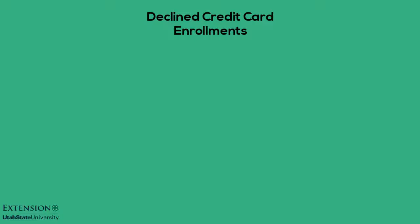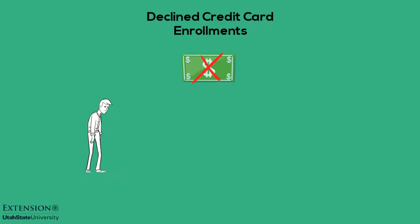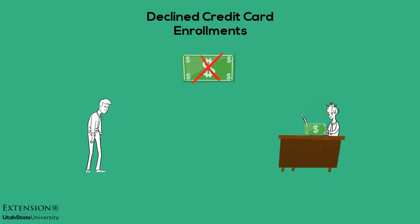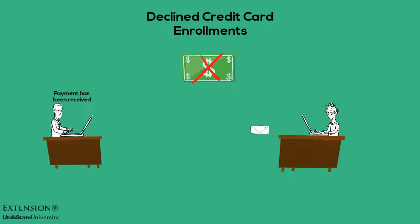If a credit card payment is declined on an enrollment fee, the member must pay the enrollment fee directly to the county office. Payment cannot be re-attempted in 4-H Online. The county office should notify the state office when payment has been received.